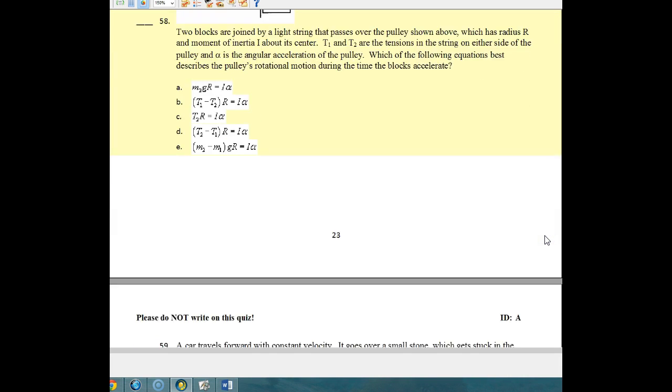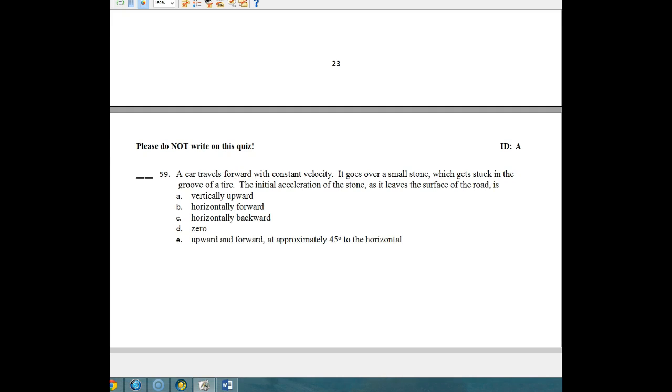59 is a very badly worded problem. And even the person who went through and I double-checked with Boris Krakinski, who's a really good physics teacher out in Massachusetts. It says a car travels forward with a constant velocity. It goes over a small stone, which gets stuck in the groove of the tire. The initial acceleration of the stone as it leaves the surface of the road is, and then you have to pick. Is it vertically upward, horizontally forward, horizontally backward, zero, or upward and forward at approximately a 45-degree angle?